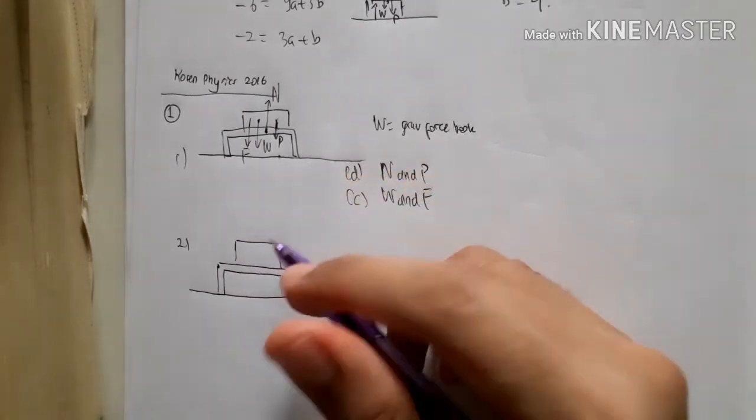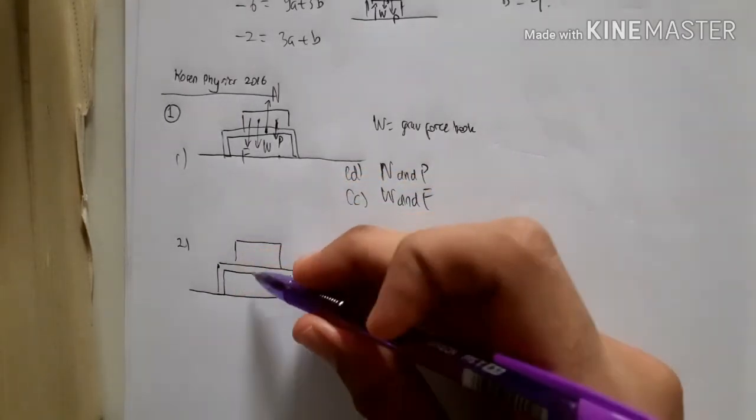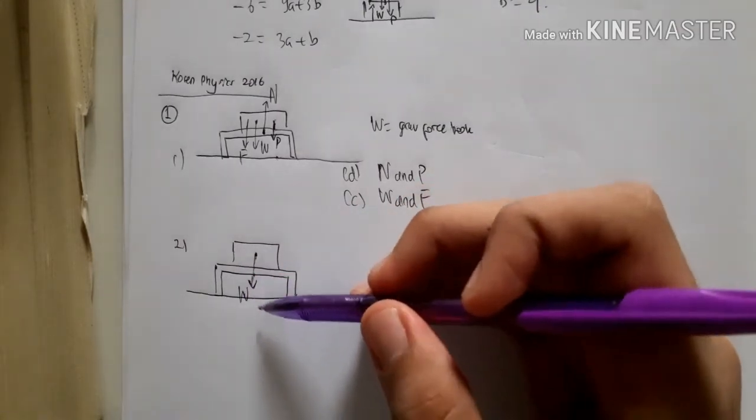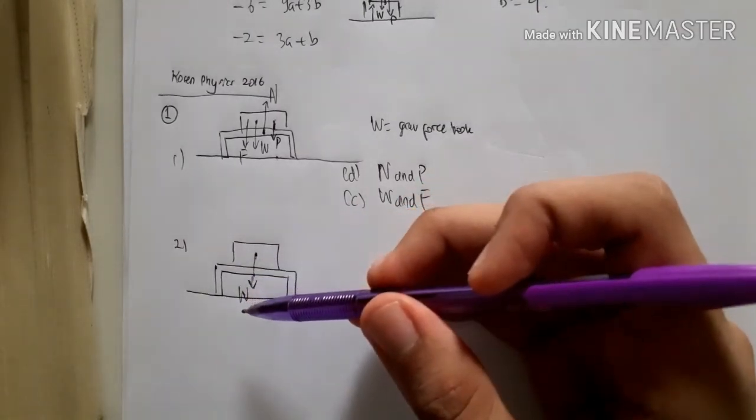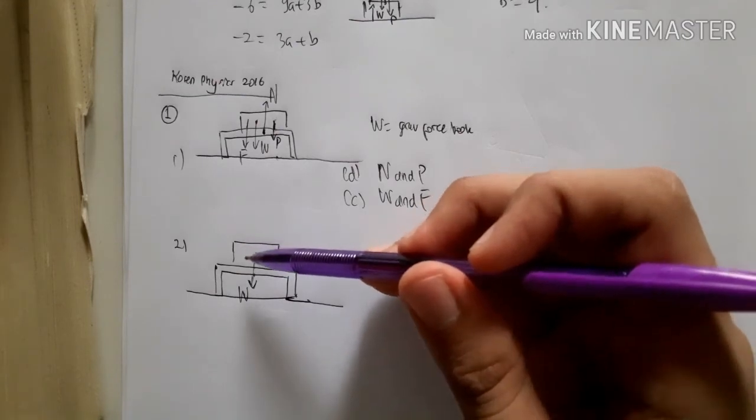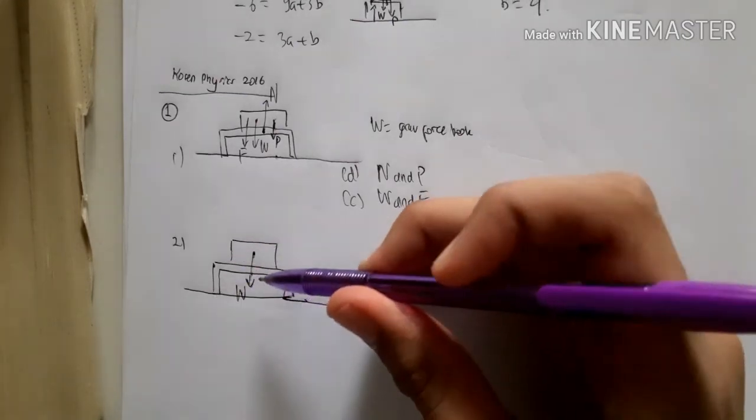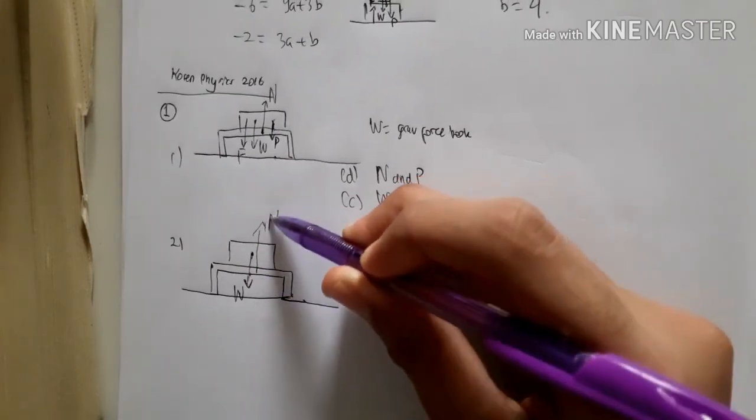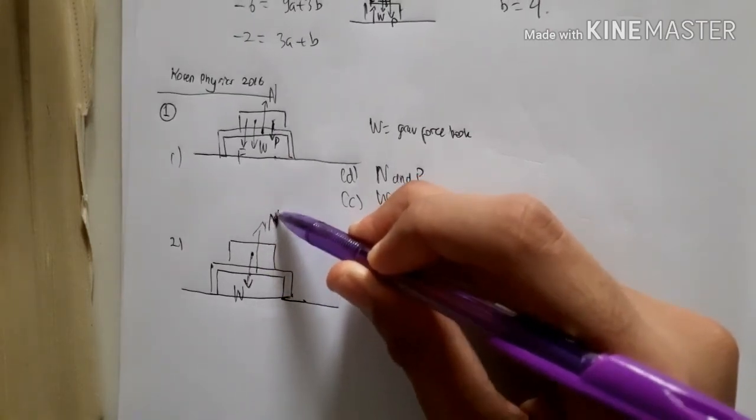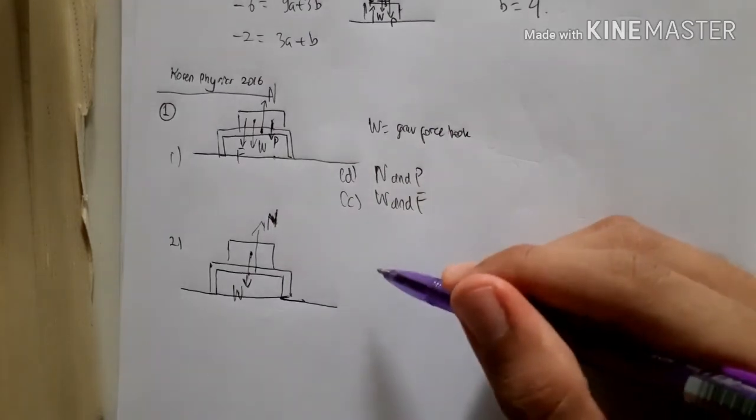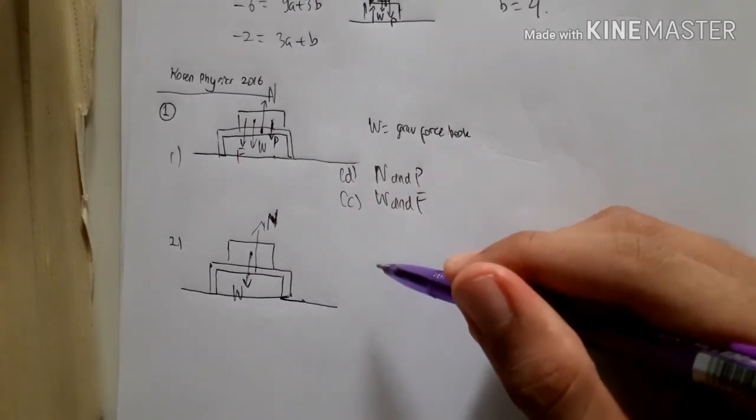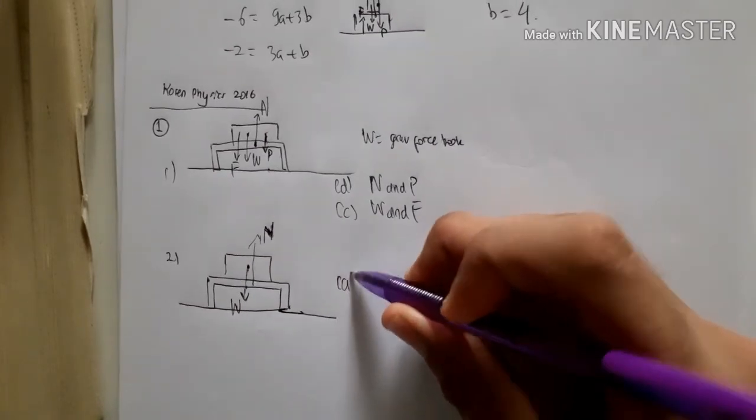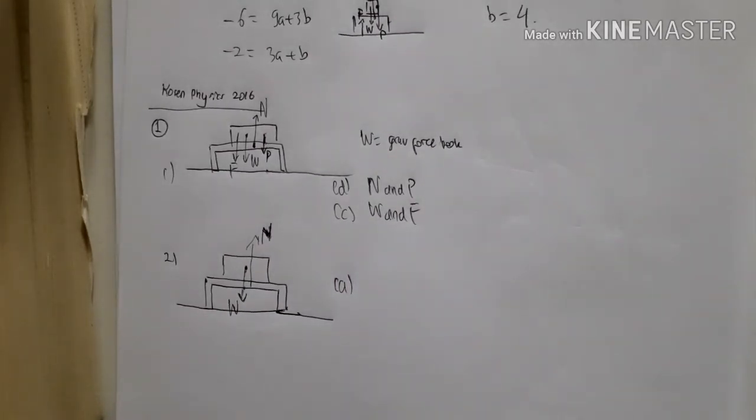So basically when the book is put on the table, it experiences a gravitational force W acting from the book towards the earth, and of course there's a normal reaction that happens from the table to the book. So these are the only forces that matter that make the whole system equilibrium. So the answer for number two is N and W, option A.